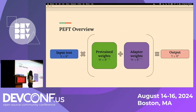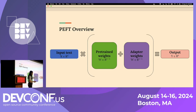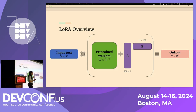A model trained using PEFT generates an output by taking the input text and computing the dot product of that with the sum of the pre-trained and adapter weights. We still need to be careful about how we apply PEFT, because in the worst case scenario where our adapter weight matrix is large — say 100 by 100 — that would mean 10,000 parameters to train, which still incurs significant computational costs. Instead, we can cleverly decompose the adapter matrix into two smaller matrices A and B, which are 100 by 1 and 1 by 100, reducing the number of parameters from 10,000 to 200. This technique is known as LoRA.